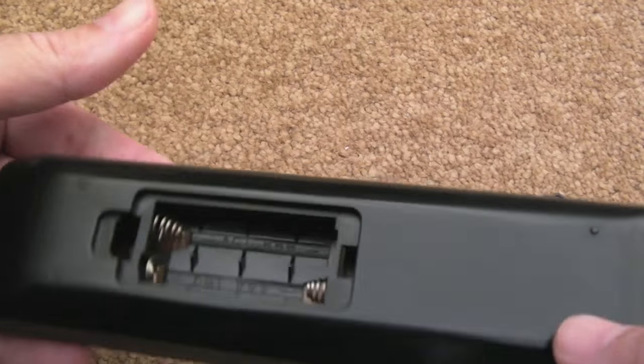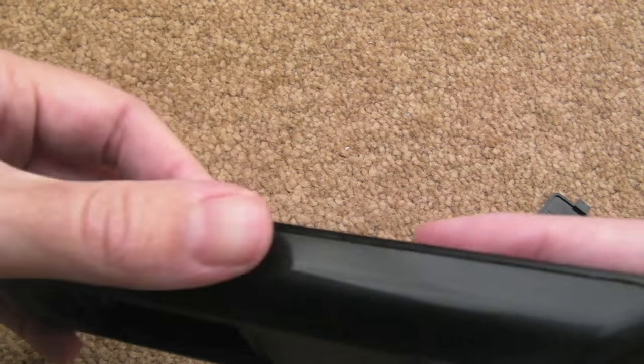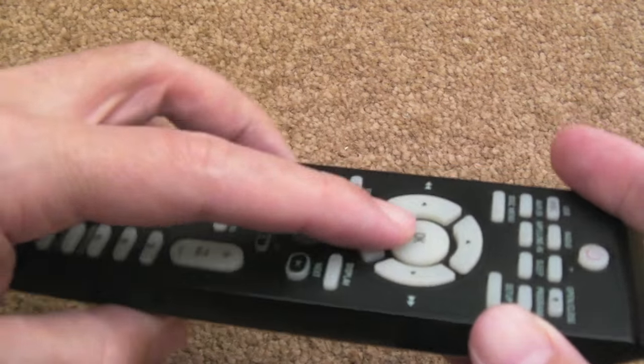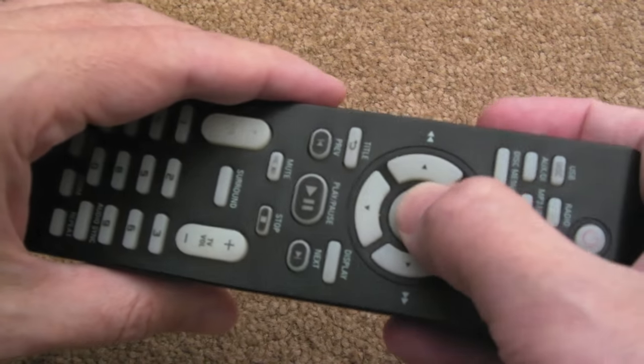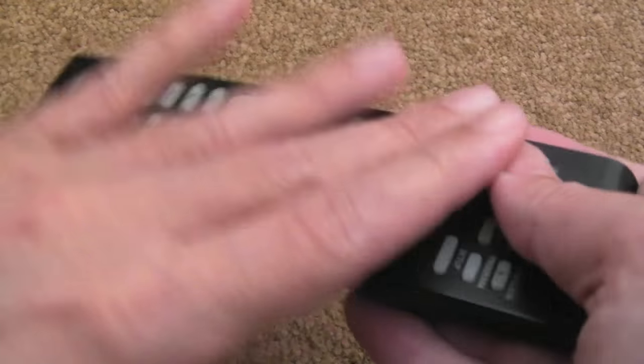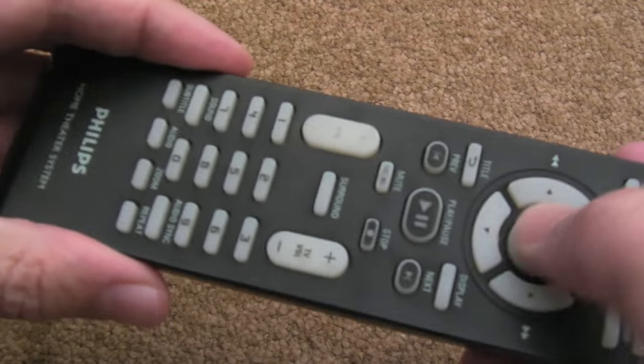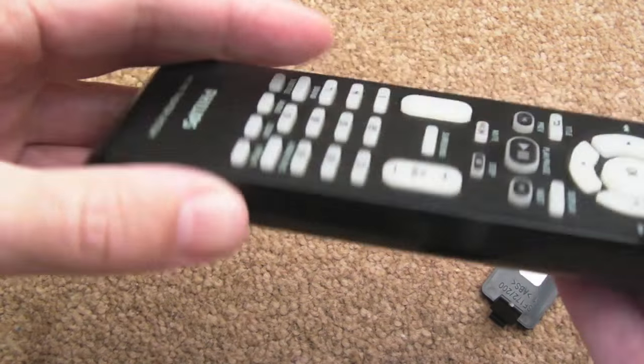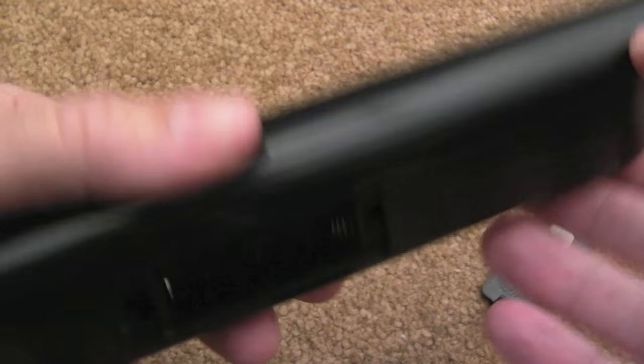See if anybody else has come across this and whether you've got a solution. There's nothing really wrong with the remote apart from the fact that it seems to be leaking something from inside the silicon, the rubber part here. It's very strange. Whether it'll stop after a period of time, I don't know.